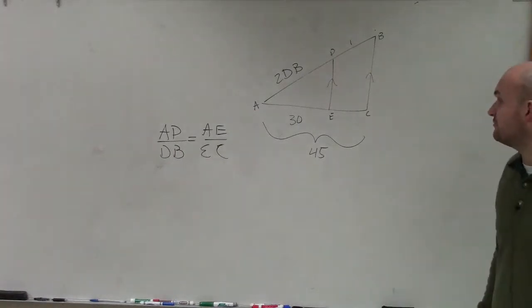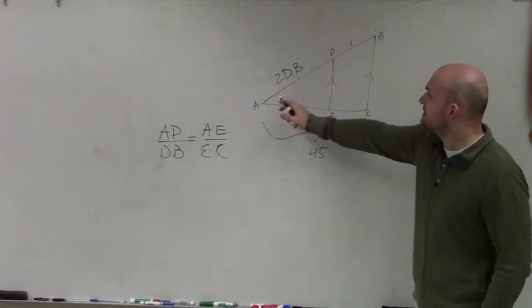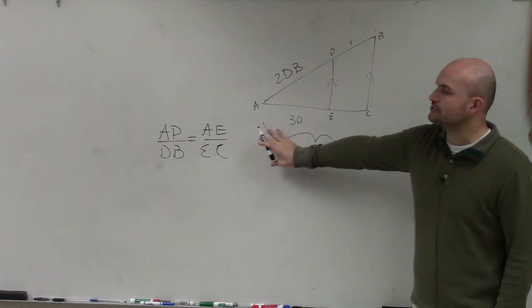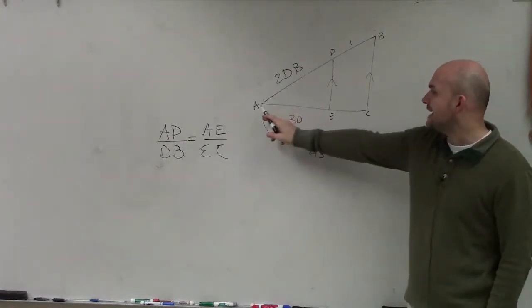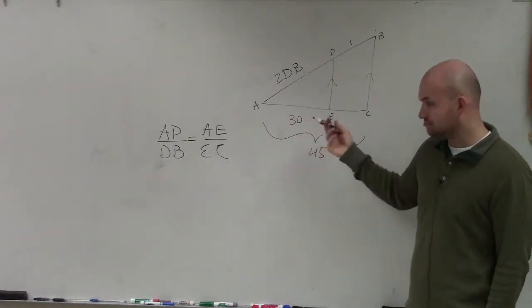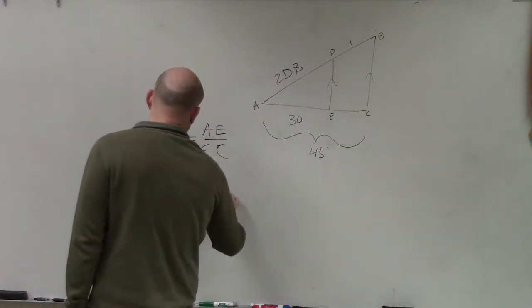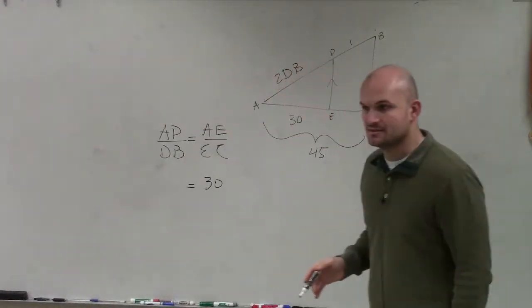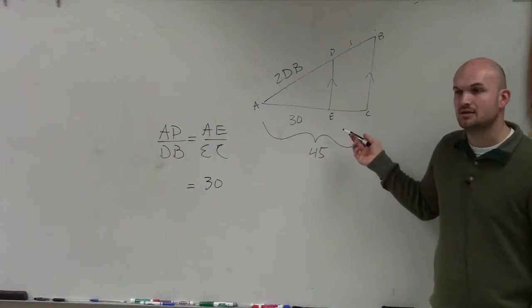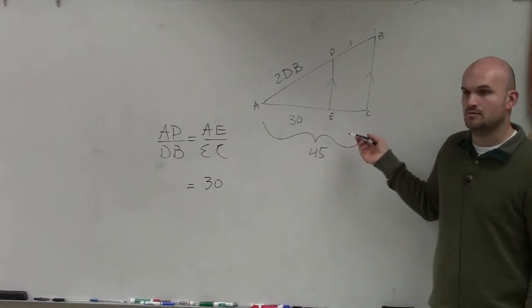So let's go and see what we can figure out. Do we know what AD is? Well, let's actually do AE and EC first. AE is 30, right? So I'll fill that in. Do we know what EC is? Is there any number for EC? No.